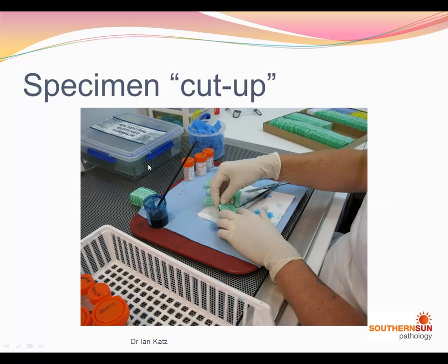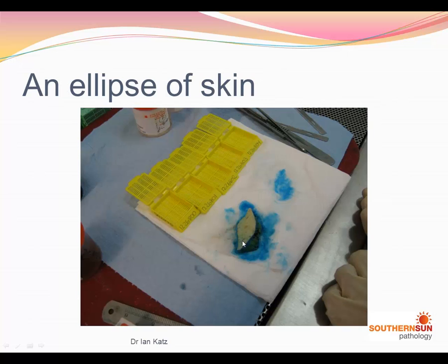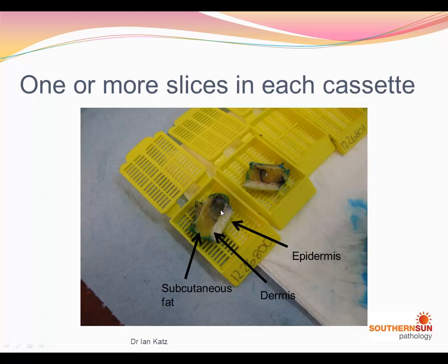A specimen ellipse looks like this, and we ink it to delineate the margins when we look at the sections under the microscope. We usually cut bread-loaf sections through it horizontally across like this, and place the different sections — sometimes more than one section in each cassette. This is what a bread-loaf, or a slice of the specimen, looks like.